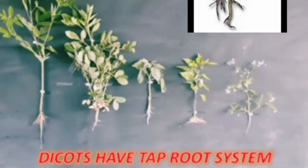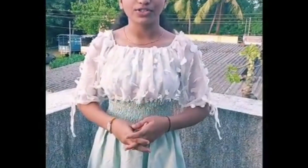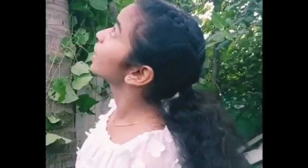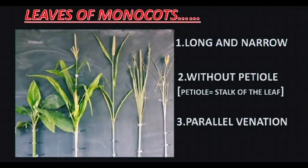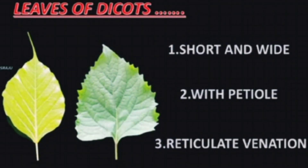Monocot stems do not have branches and dicot stems have branches. For example, this is a coconut tree — monocot, no branches. This is a mango tree — dicot, it has branches. Leaves of monocots are long and narrow, without a petiole, and have parallel venation. Leaves of dicots are short and wide, with a petiole, and have reticulate venation.